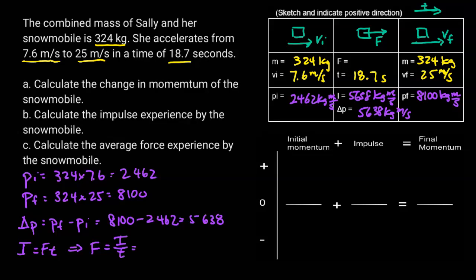The impulse is 5,638 and the time is 18.7, and we get 301 Newtons. That's going to be 301 Newtons.